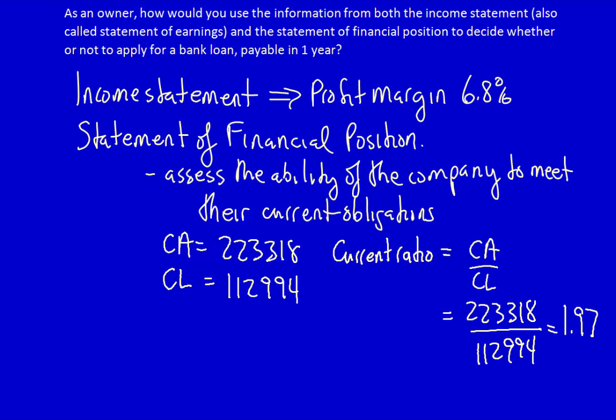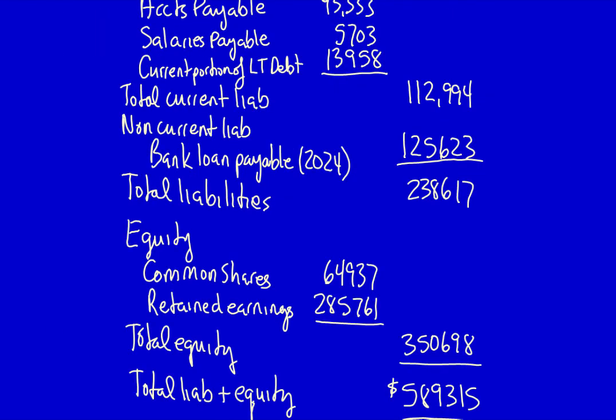The statement of financial position also shows how a company is financed. This company has total liabilities of $238,617 and total equity of $350,698. We can show how the assets have been financed — are the assets mainly financed through debt or equity? We calculate the percentage financed through debt and the percentage financed through equity. Remember that total assets equal total liabilities plus equity.